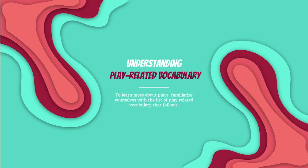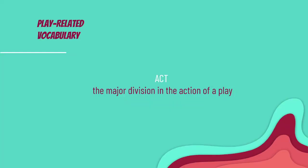Understanding play-related vocabulary. To learn more about plays, familiarize yourselves with a list of play-related vocabulary that follows. Act — the major division in the action of a play. An act is a major division of a theater work, including a play, film, opera, or a musical theater, consisting of one or more scenes. The term can either refer to a conscious division played within a work by a playwright, usually itself made up of multiple scenes, or a unit of analysis for dividing a dramatic work into sequences.